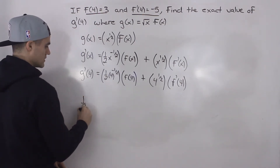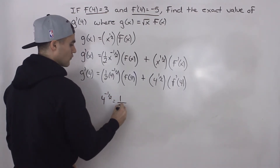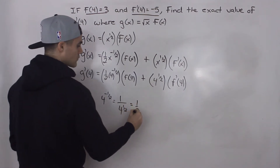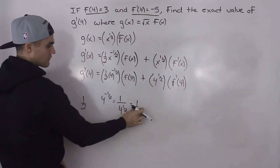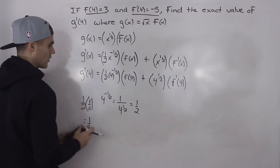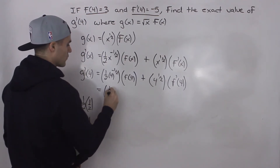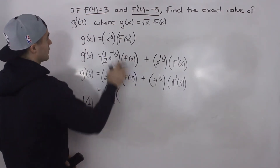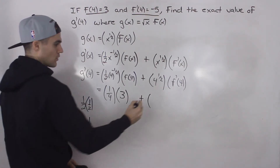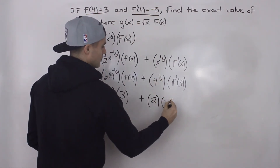So one half times 4 to the power of negative one half: 4 to the negative one half is the same as 1 over 4 to the one half, and 4 to the one half is the square root of 4, which is 2 — so 4 to the negative one half is 1 over 2. Then one half times one half gives us one quarter. f(4) is given as 3. And 4 to the power of one half is just the square root of 4, which is 2. f'(4) is given as negative 5.